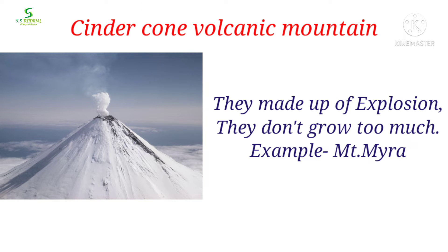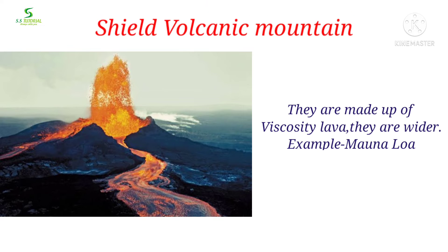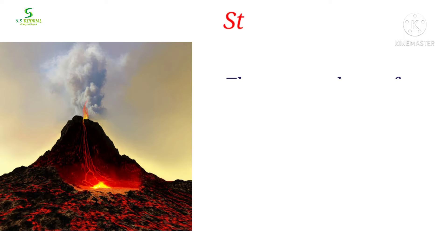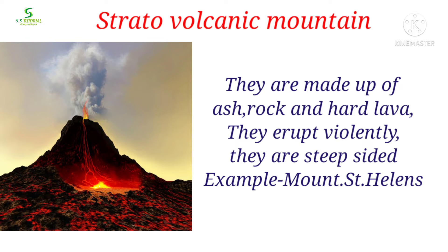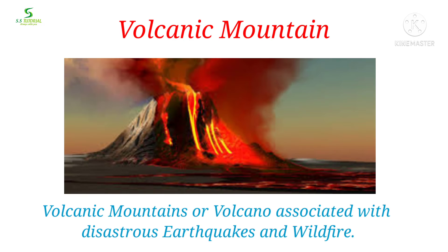There are different types of volcanic mountains. Cinder cone mountains are made up of explosive eruptions and don't grow very large. Shield volcanoes are made up of low viscosity lava and are much wider. Strato volcanoes are composite types made up of ash, rocks, and hot lava — the most impressive and well-known volcanic mountains.